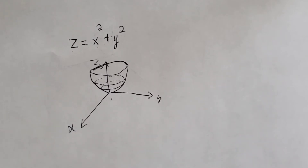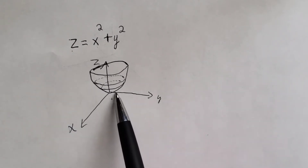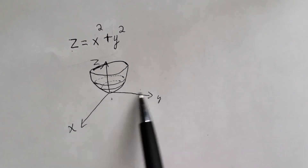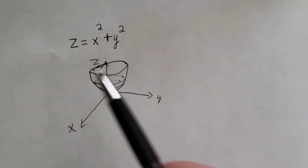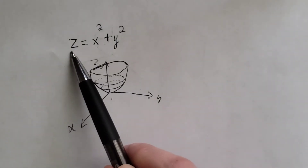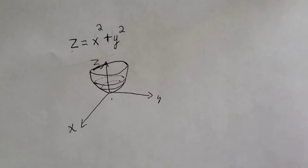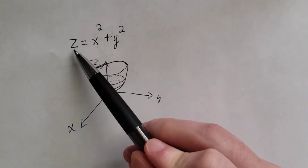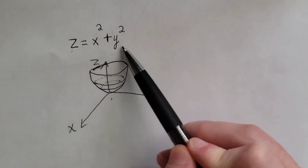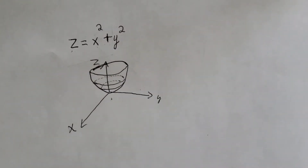We've drawn the paraboloid centered around the z-axis. If we wanted a paraboloid centered around the y-axis in the positive direction it would be y equals x squared plus z squared, and centered around the x-axis that would be x equals y squared plus z squared.